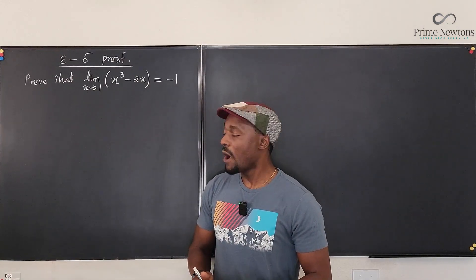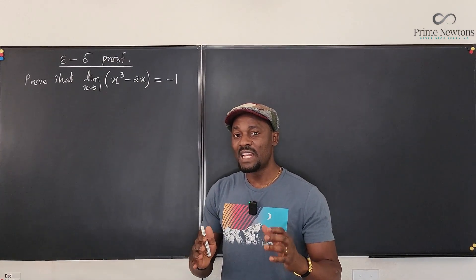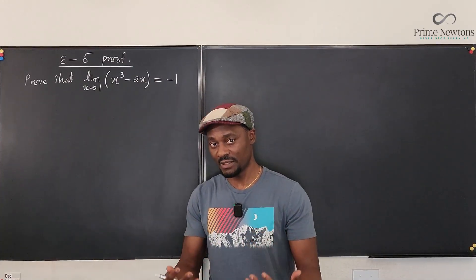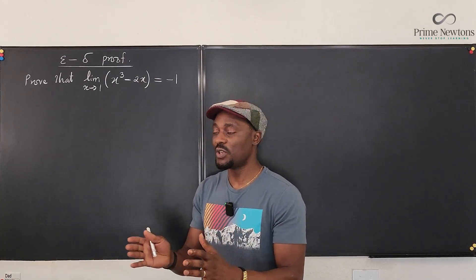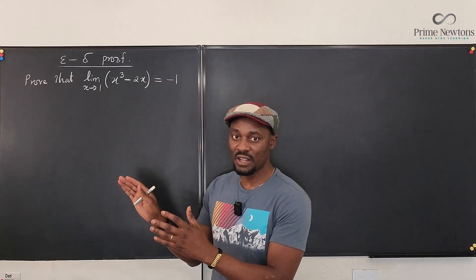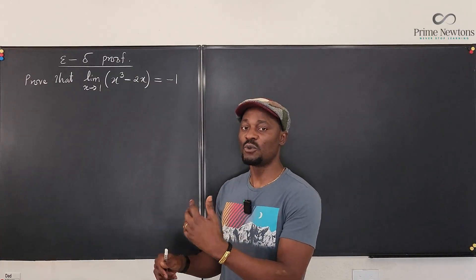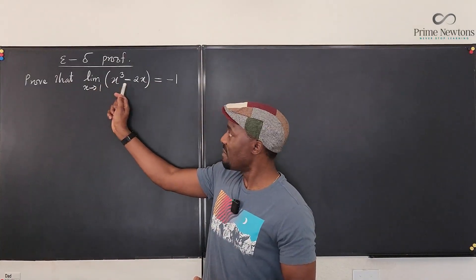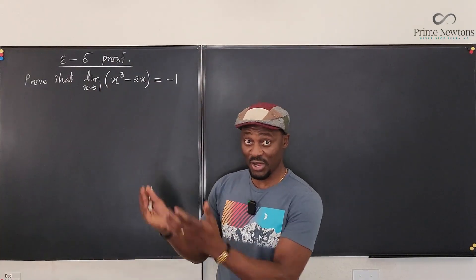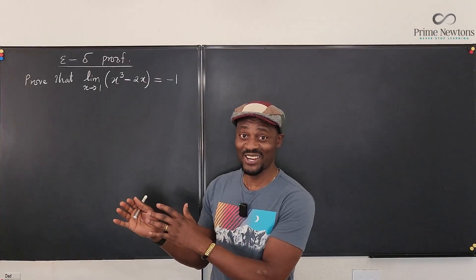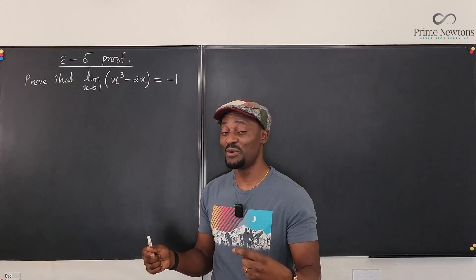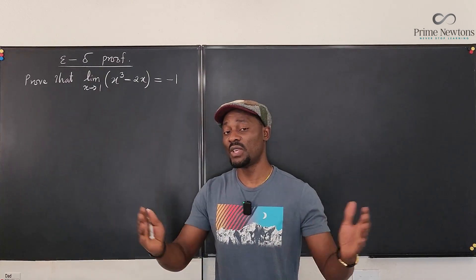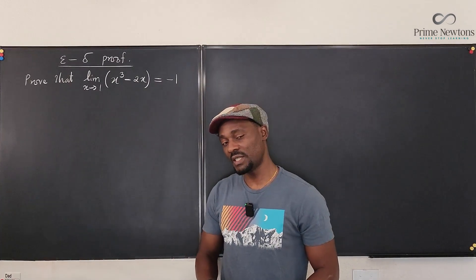Remember that it is important to know what the definition of a limit is, because if you don't know it, you can't do the proof. So I'm going to write the definition of the limit, and then we'll use it to prove that this limit is minus one. Nobody's asking you to calculate the limit — we're trying to do the proof. It's always a sequence of steps. If you can master it, you can answer any of these questions.